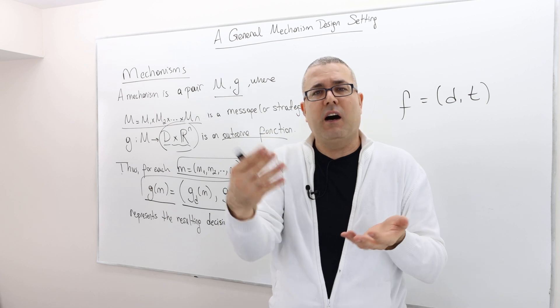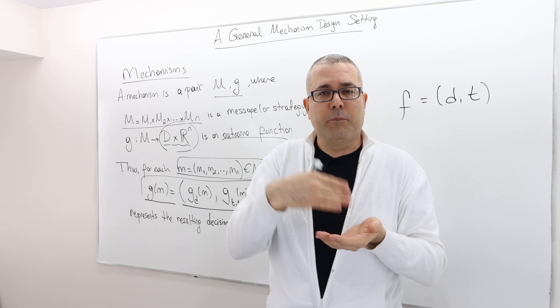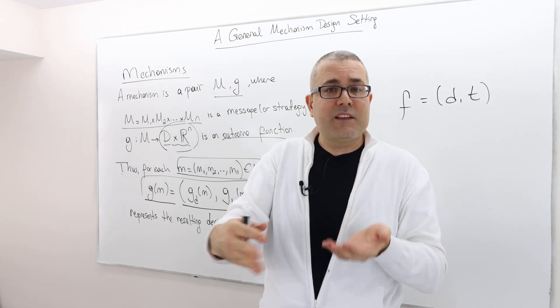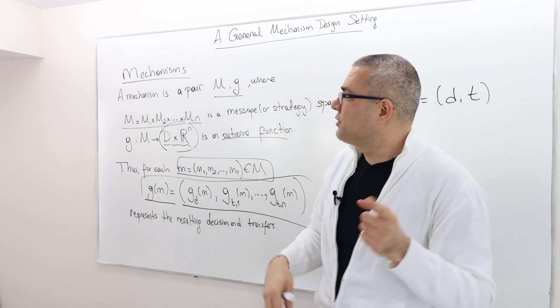But in fact, if you remember, it is optimal to bid and pay less than your true valuation in the first price auction, if you remember. So in the first price auction, the mechanism is not going to ask people, tell me your true value.